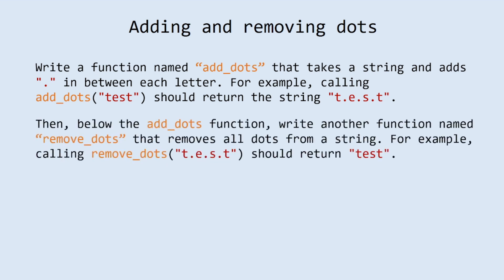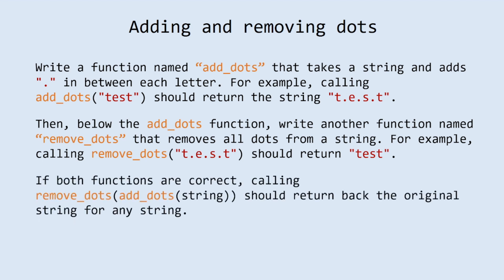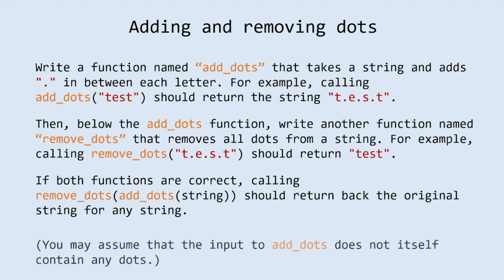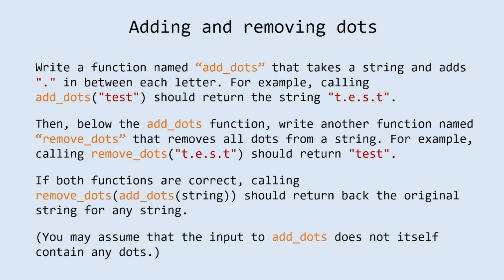Then, below the addDots function, write another function named removeDots that removes all dots from a string. For example, calling removeDots with the string 't.e.s.t' should return 'test'. If both functions are correct, calling removeDots with the addDots function result should return back the original string for any string. You may assume that the input to addDots does not itself contain any dots.